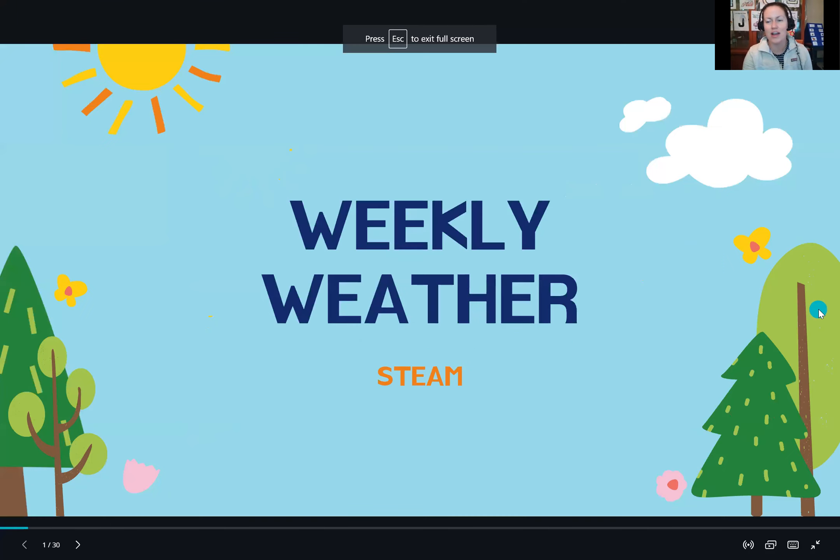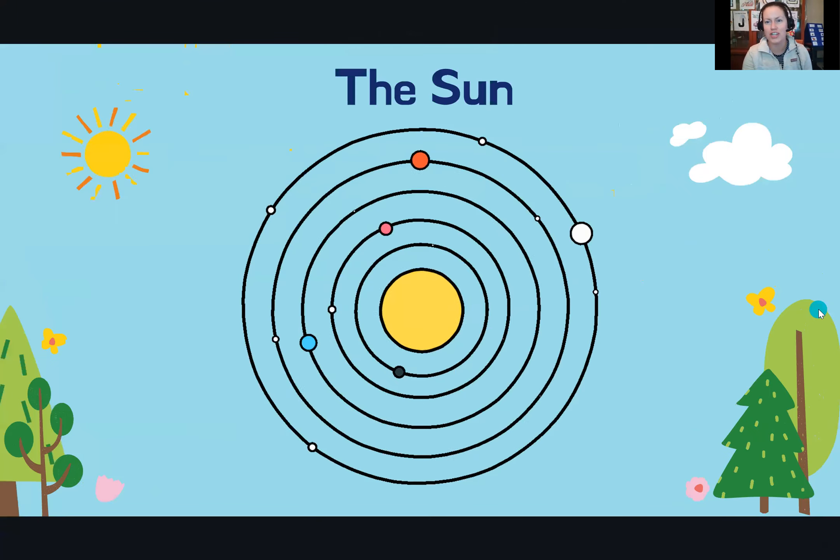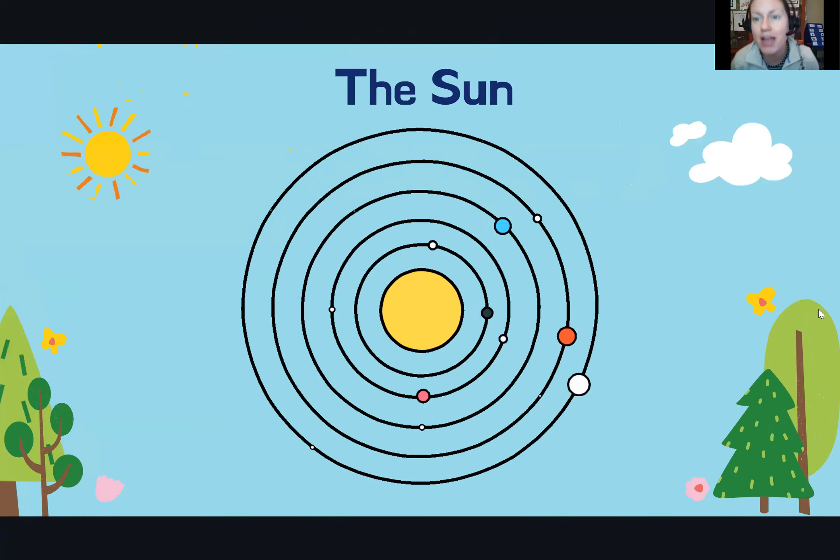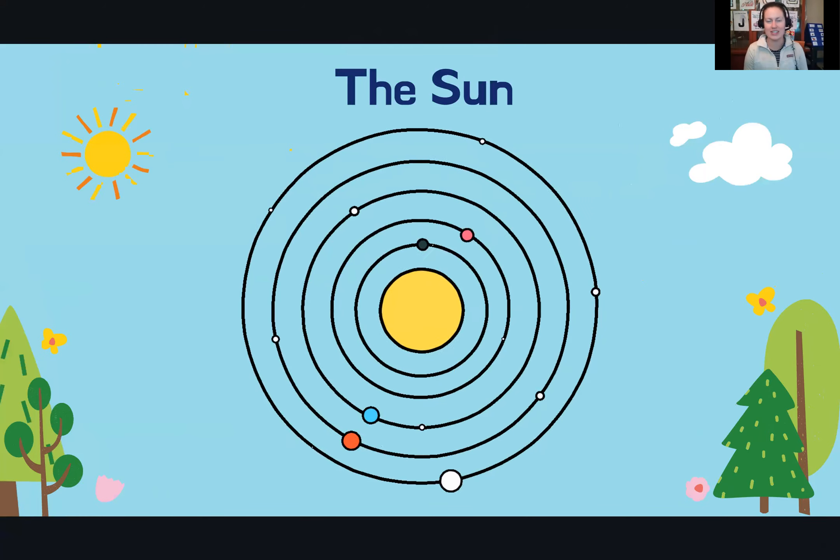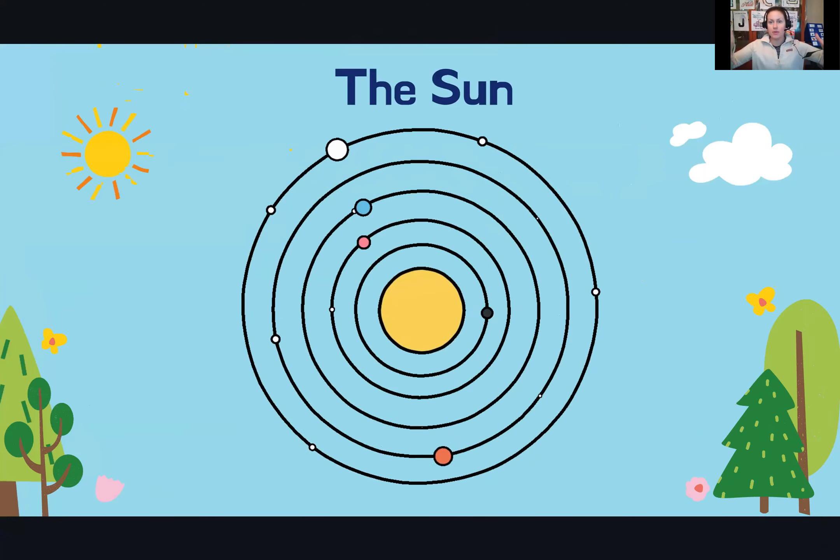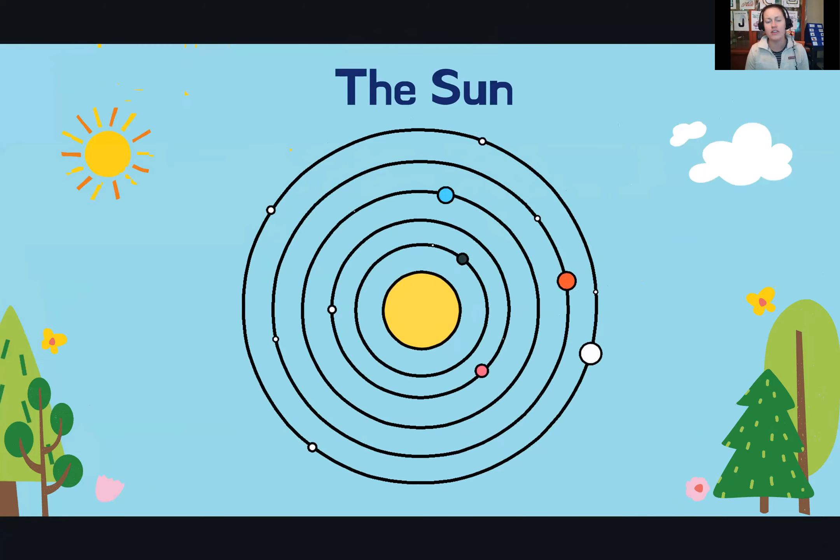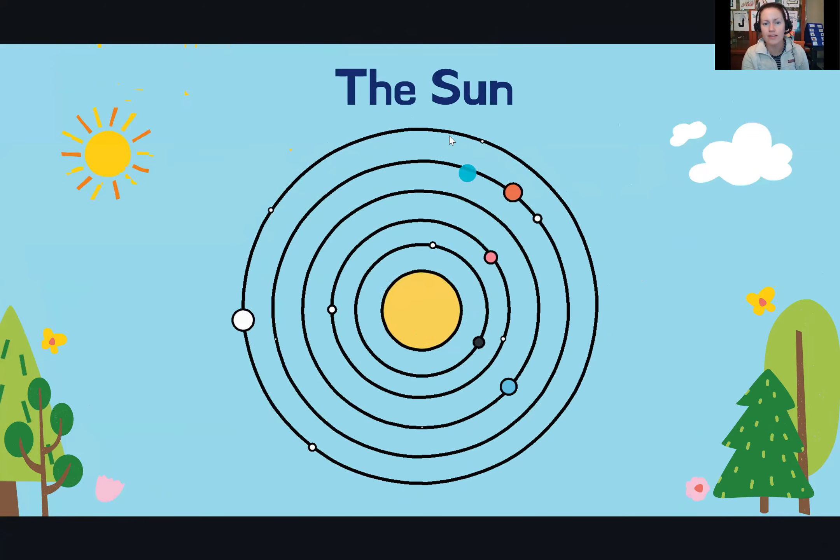So here we go. Normally we do our weather check, so I want you to check out by your window what your weather is like. And like I mentioned, we're going to talk about the sun. If you are out in space looking back down, this is a simplified version of our solar system. That means this is the sun and these are all the planets that orbit around the sun.